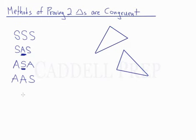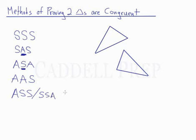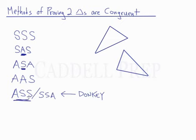You cannot use ASS — angle, side, side — or SSA — side, side, angle — to prove two triangles are congruent. If you use this method, it doesn't work. We're going to put a big red X over this. Do not use that; it is not correct.